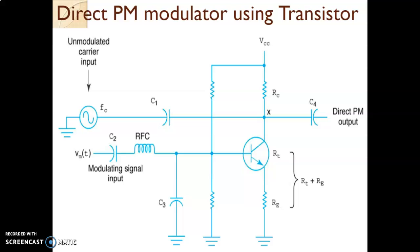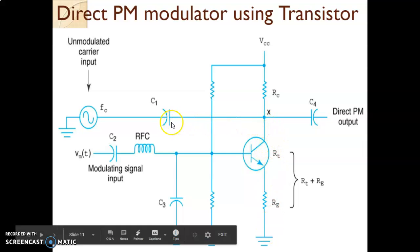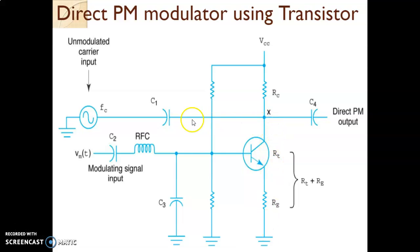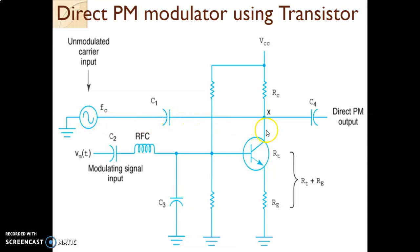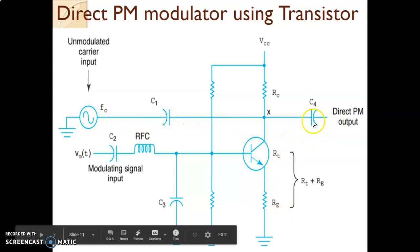We know that an RC network will produce a phase shift of less than 60 degrees. C1 and the X-to-ground path — considering the transistor is conducting — and C1, RT, and RE values are selected such that we get a phase shift of 45 degrees. So when the modulating signal is not applied, the carrier is given a phase shift of 45 degrees and it is available at the output.